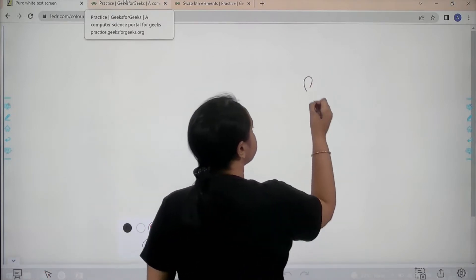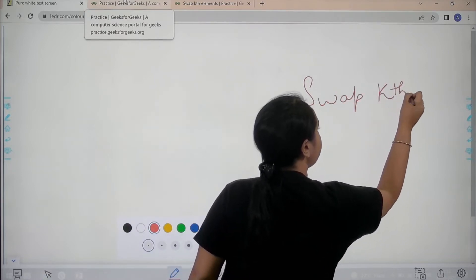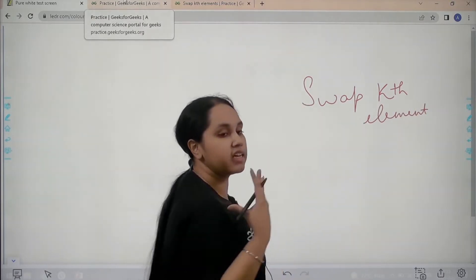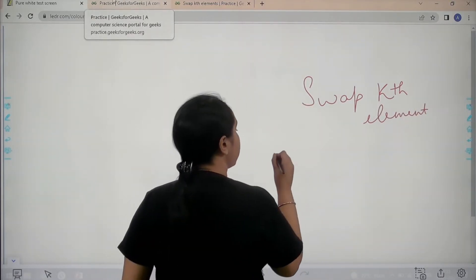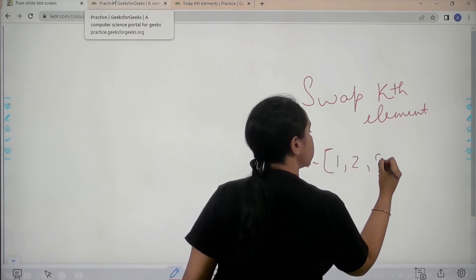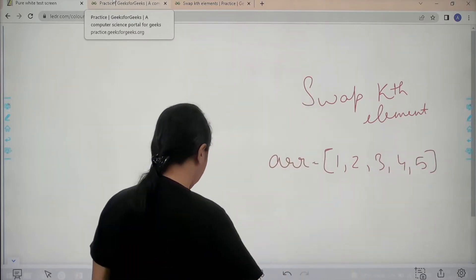So the problem is swap the kth element. Basically in this question we are given an array of numbers. So our array is for example 1, 2, 3, 4 and 5. This is the given array to us.